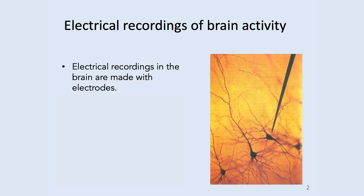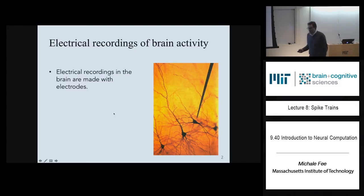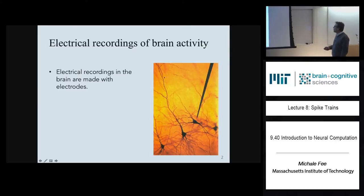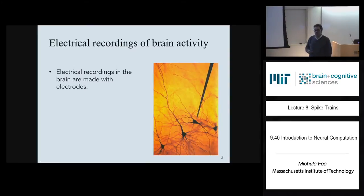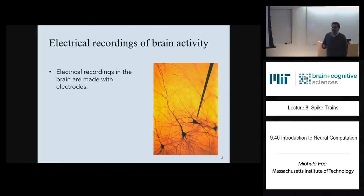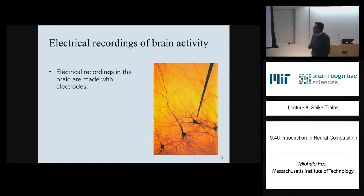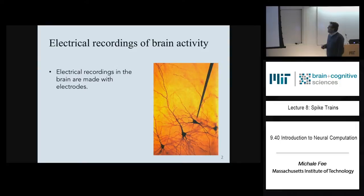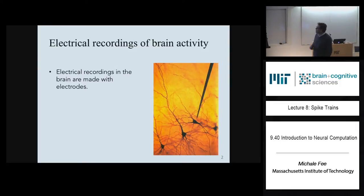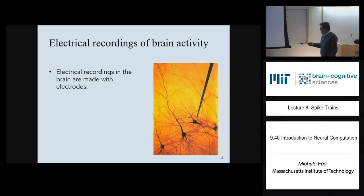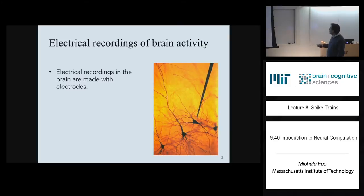So far in class, we have been analyzing measurements of electrical signals recorded inside of neurons. For example, in the voltage clamp experiment, we imagined placing electrodes inside of cells so that we could measure the voltage inside of cells. But it's actually quite difficult, in general, to record membrane potentials of neurons in behaving animals. It's much easier to record electrical signals outside of neurons, and in this case we can actually record action potentials.